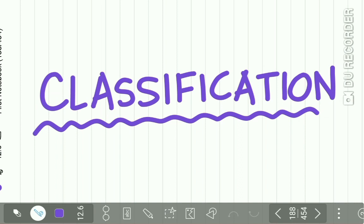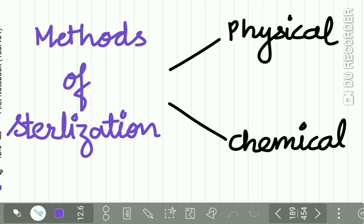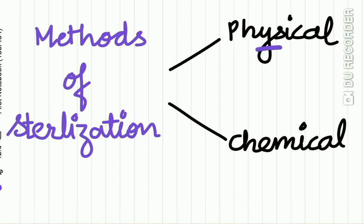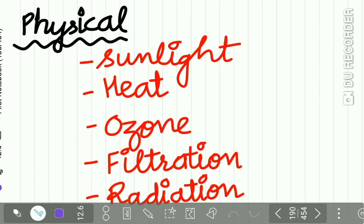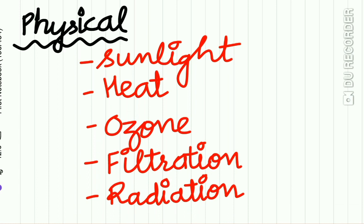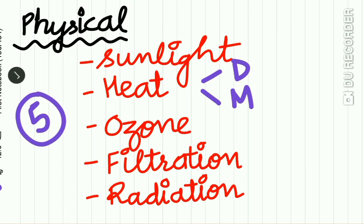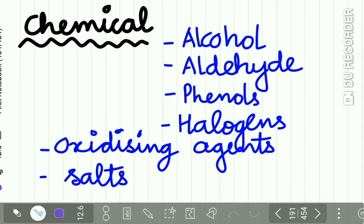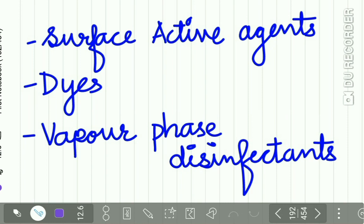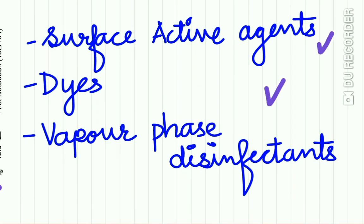The methods of sterilization are divided into physical methods and chemical methods. The physical methods include sunlight, heat, ozone, filtration, and radiation. Heat is further divided into dry heat and moist heat. The chemical methods include use of various chemicals such as alcohols, aldehydes, phenols, halogens, certain oxidizing agents, salts, surface-active agents, certain dyes, and vapor-phase disinfectants.